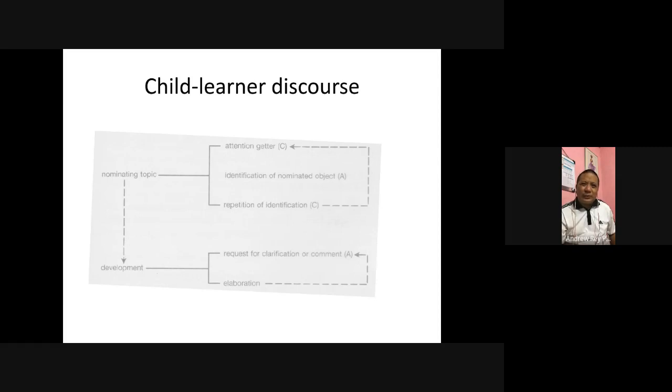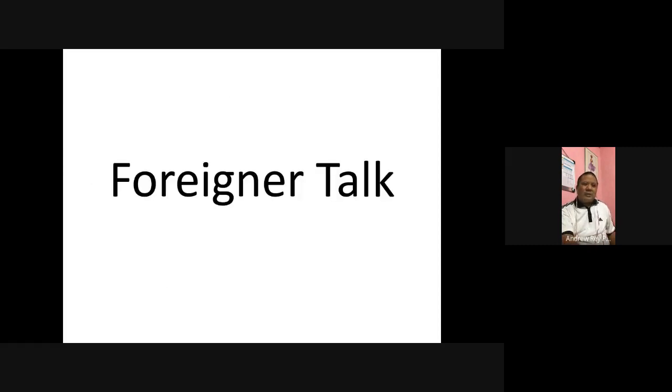That's what researchers found in terms of discourse between a child and an adult. A child starts out by getting the attention of the adult, mentioning the object or the topic, and then repeats the discussion about the object. He also requests for clarification regarding the topic, clarification or comment, and then further elaboration. I'm sure you've encountered a child who will first ask you 'Ano po yung ganito?' and then you say something and then the child asks for more elaboration.